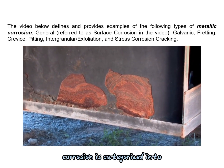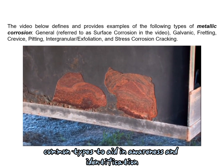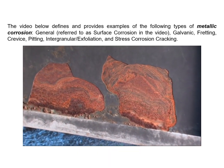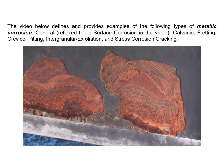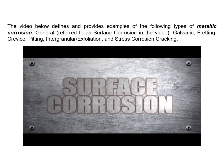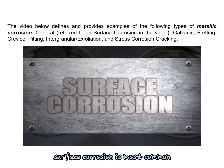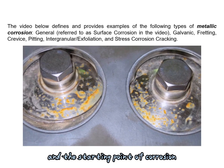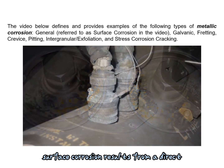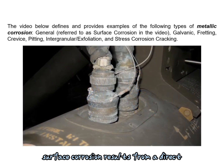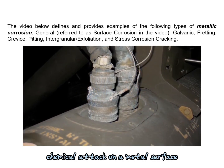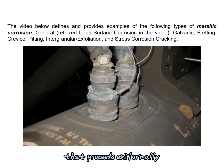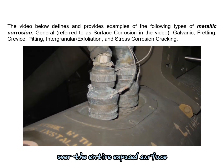Corrosion is categorized into common types to aid in awareness and identification. Surface corrosion is the most common and the starting point of corrosion. Surface corrosion results from a direct chemical attack on a metal surface that proceeds uniformly over the entire exposed surface.